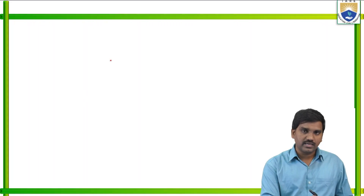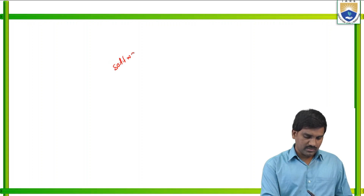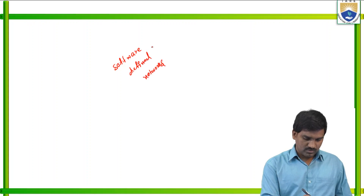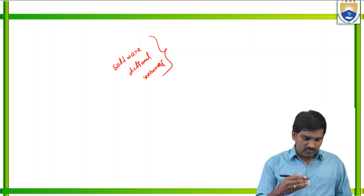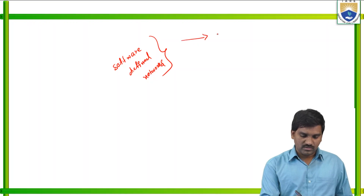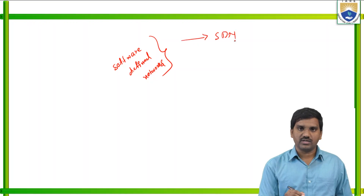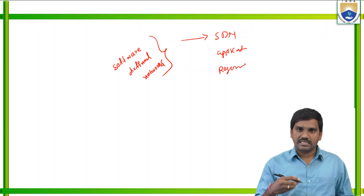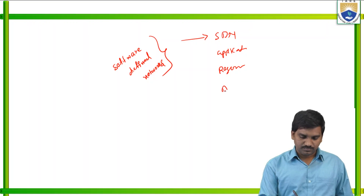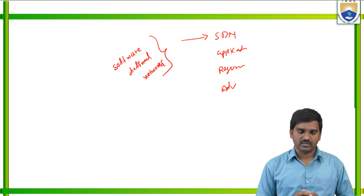In the previous class, we discussed the main important topics of software defined networking. We covered what is SDN, applications of software defined networking, what are the requirements, what are the challenges, what are the disadvantages, and advantages.